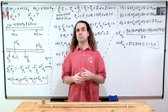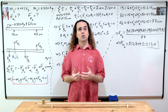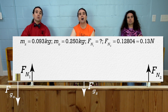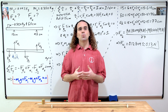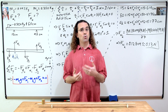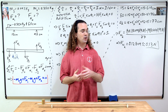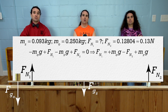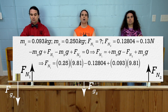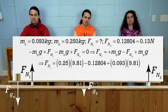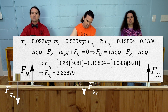We have solved for force normal two. To solve for force normal one, we use the equation holster. We can solve the net force equation for force normal one and substitute in known values: force normal one equals (0.250 × 9.81) minus 0.12804 plus (0.093 × 9.81), which equals 3.23679, or 3.2 newtons with two significant digits. We also could have solved for force normal one by summing the torques about a different axis of rotation, since the meter stick is in static equilibrium and the net torque equals zero about any axis.